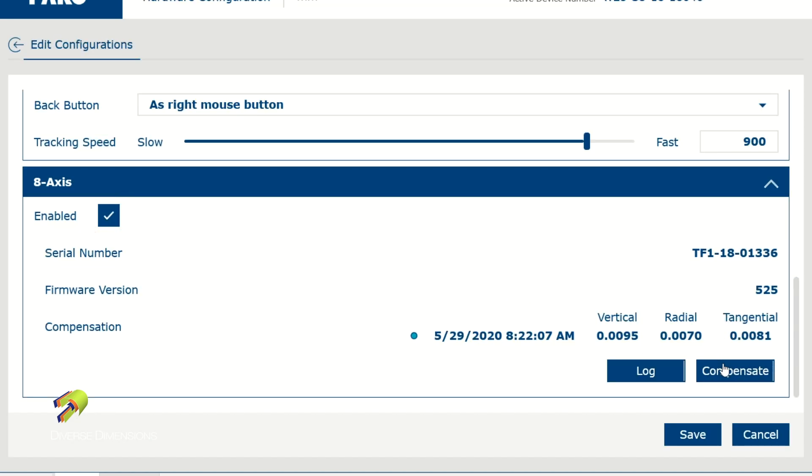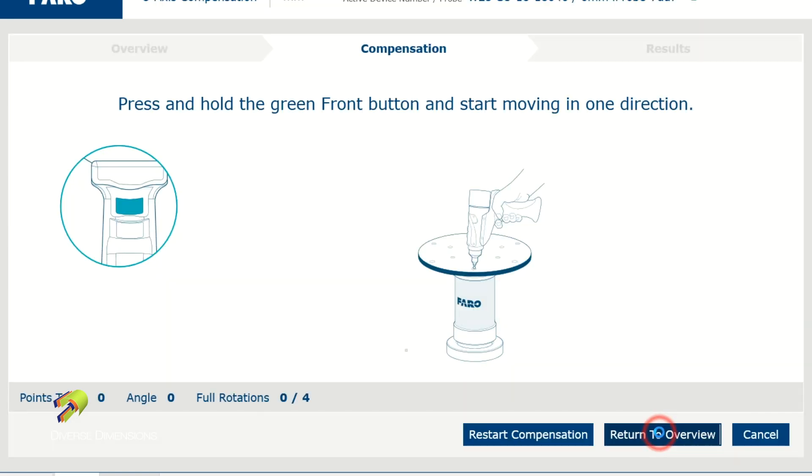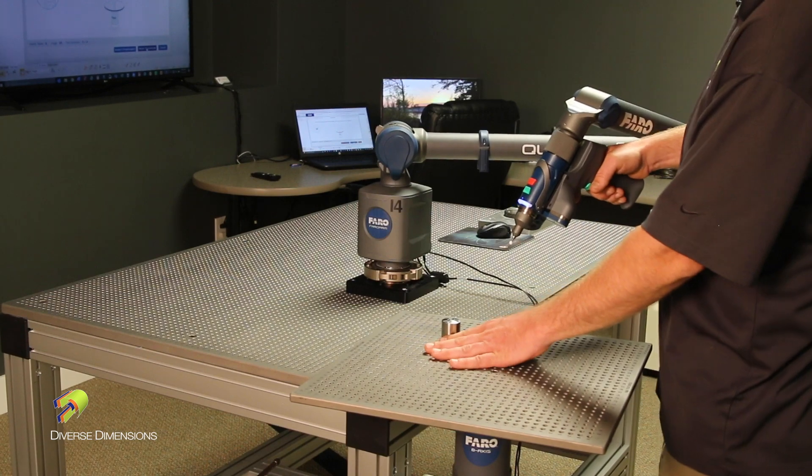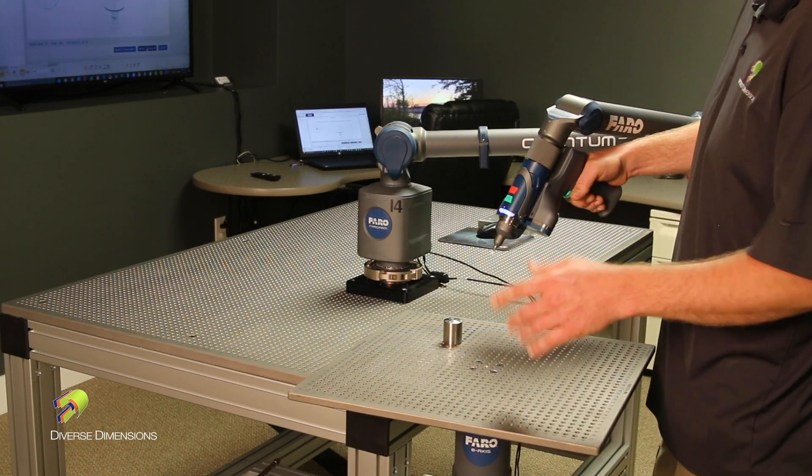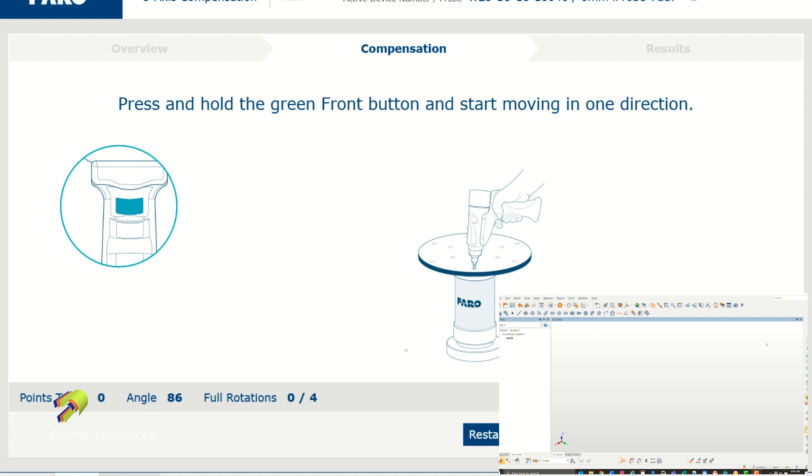Once we enable the eighth axis, click the compensate button, left click, start compensation. From there, follow instructions on the screen. We've got compensation cones available for purchase on our website. Also, put the arm in the cone.